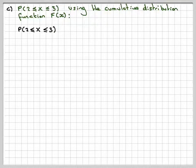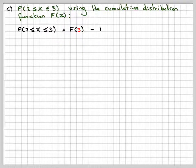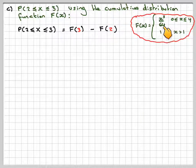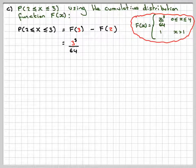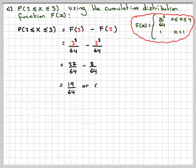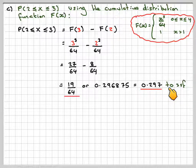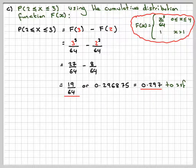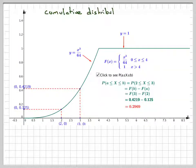Doing it algebraically: the probability of X being between 2 and 3 is F(3) minus F(2). Since F(x) = x³/64, it's 3³/64 minus 2³/64, which gives 27/64 minus 8/64, which gives 19/64, or 0.297 to three significant figures. The exact value of 19/64 is preferable.